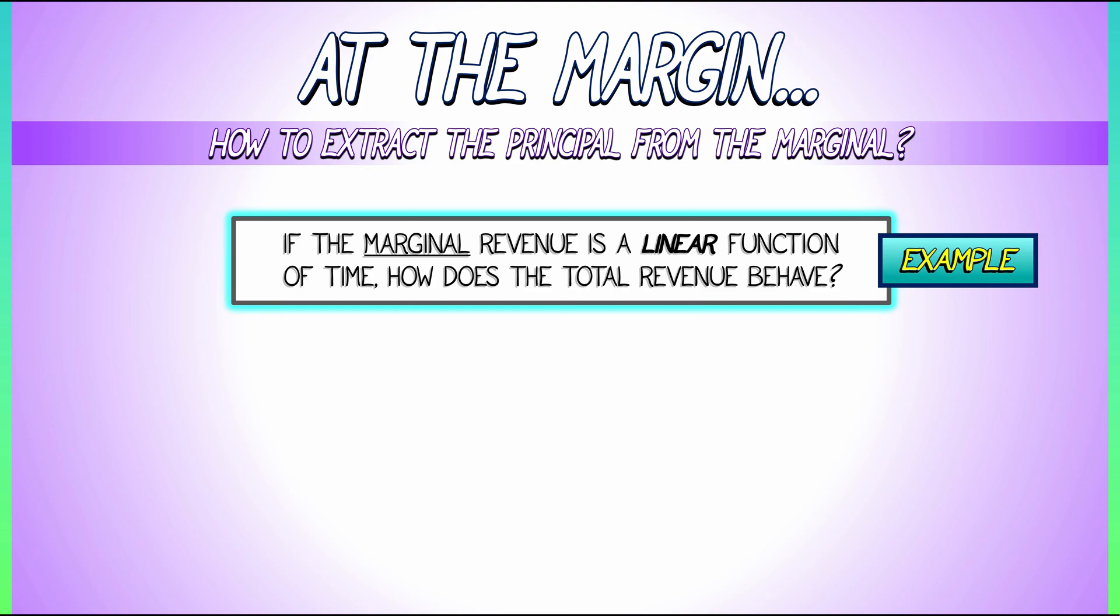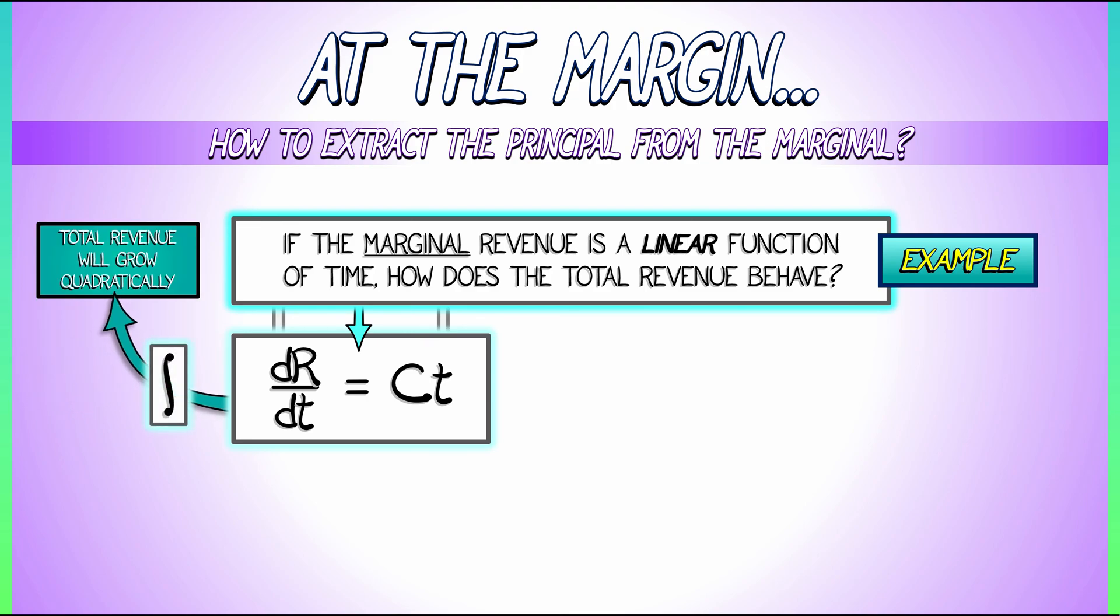Saying that the marginal revenue is a linear function of time means that dr dt, the derivative of the revenue with respect to time, is a linear function. That is some constant times t. To get the total revenue, we anti-differentiate. We integrate. What is the integral of a constant times t? You know that. That is one half that constant t squared. This means that when we integrate, the total revenue is going to grow quadratically. Did I forget the constant? I kind of forgot the constant. But the asymptotics don't change. Linear marginal revenue leads to quadratic total revenue.